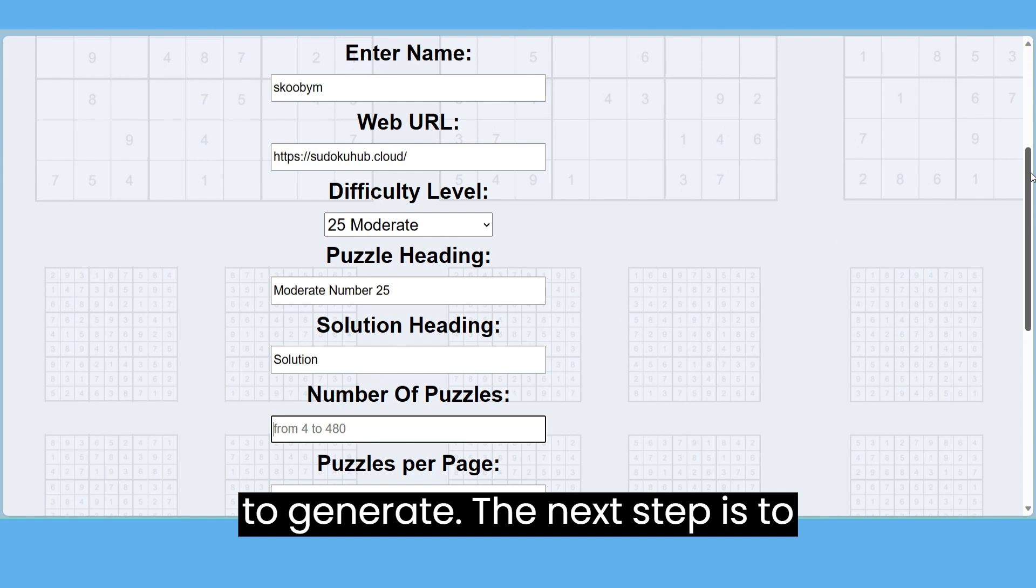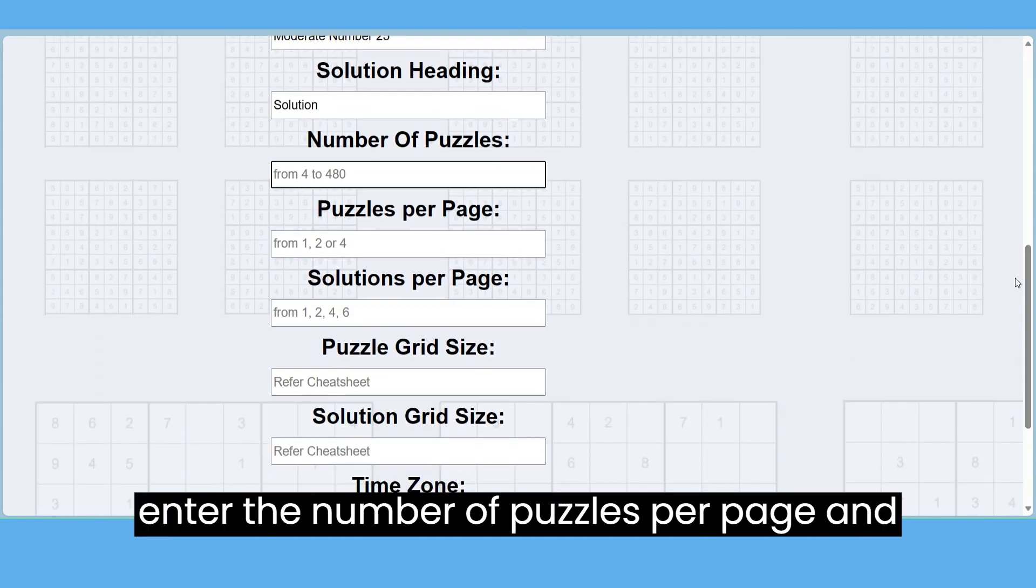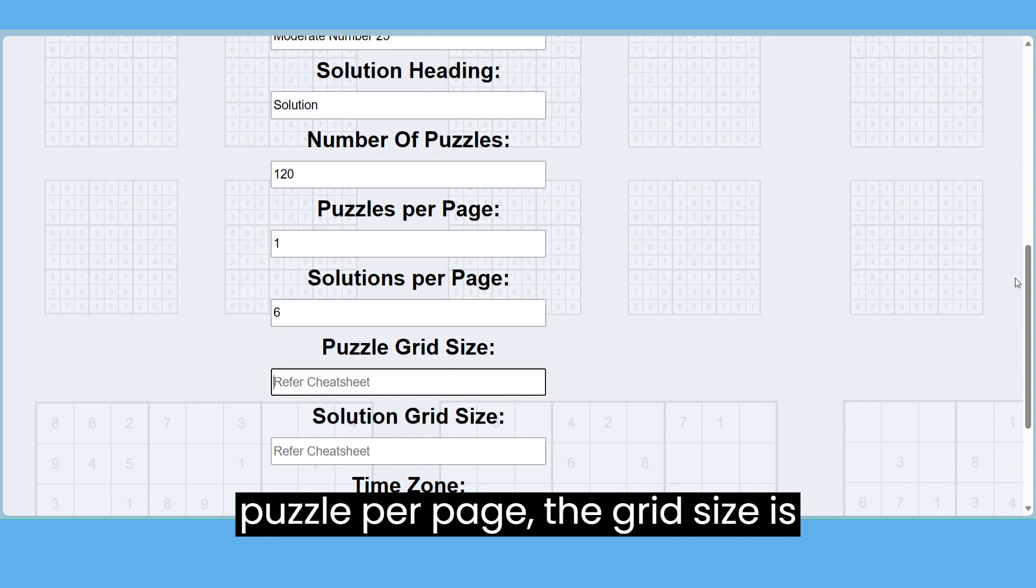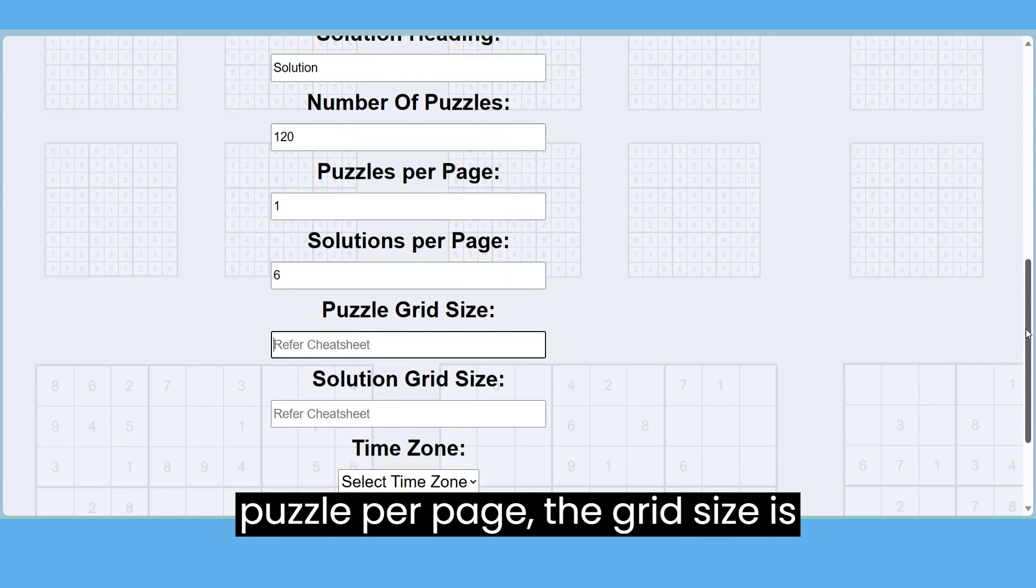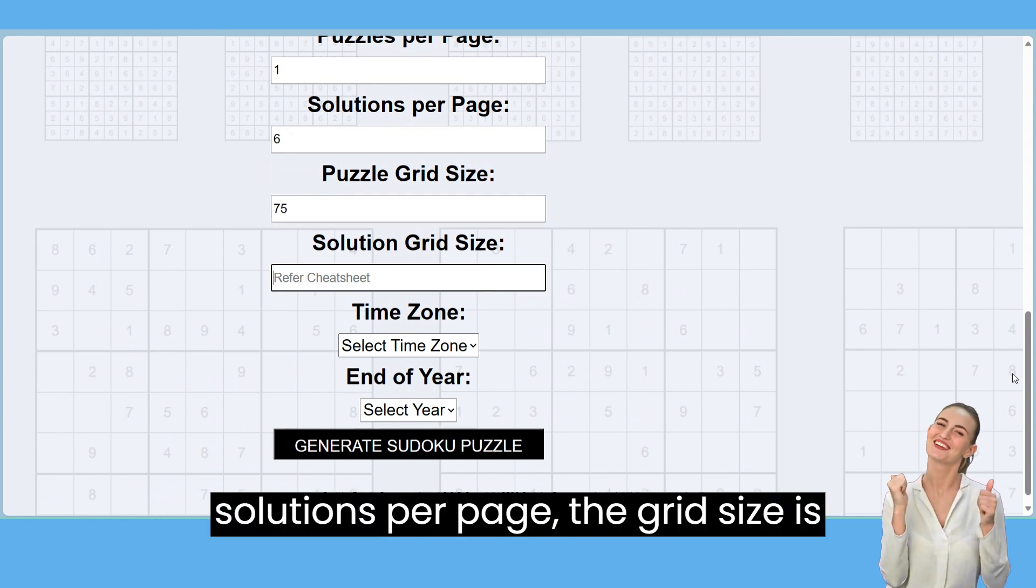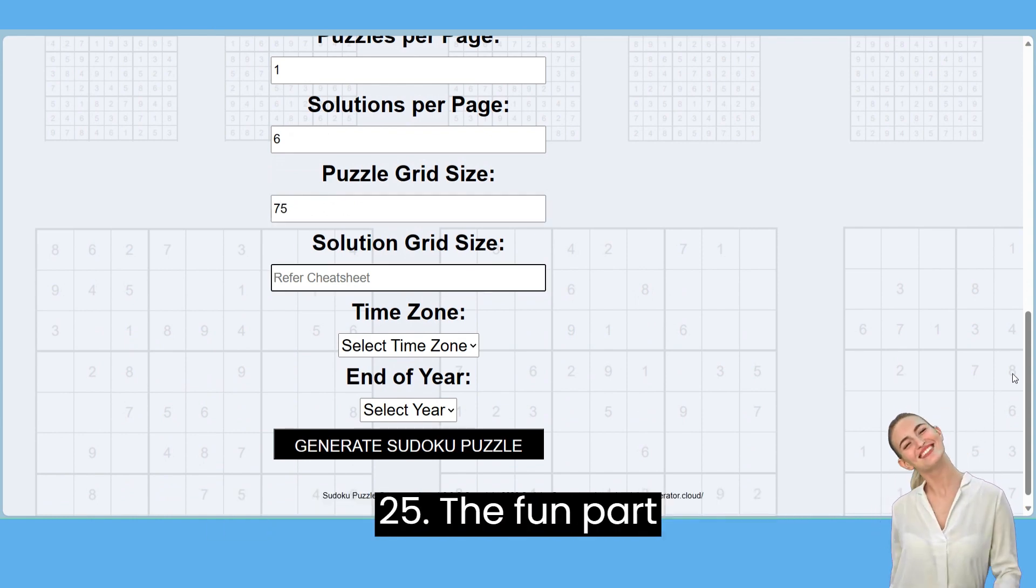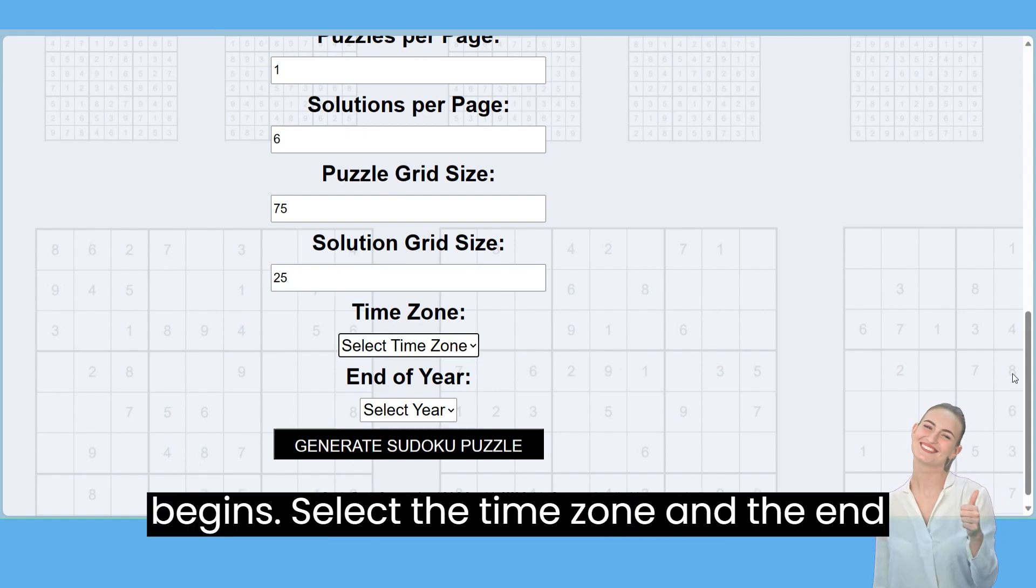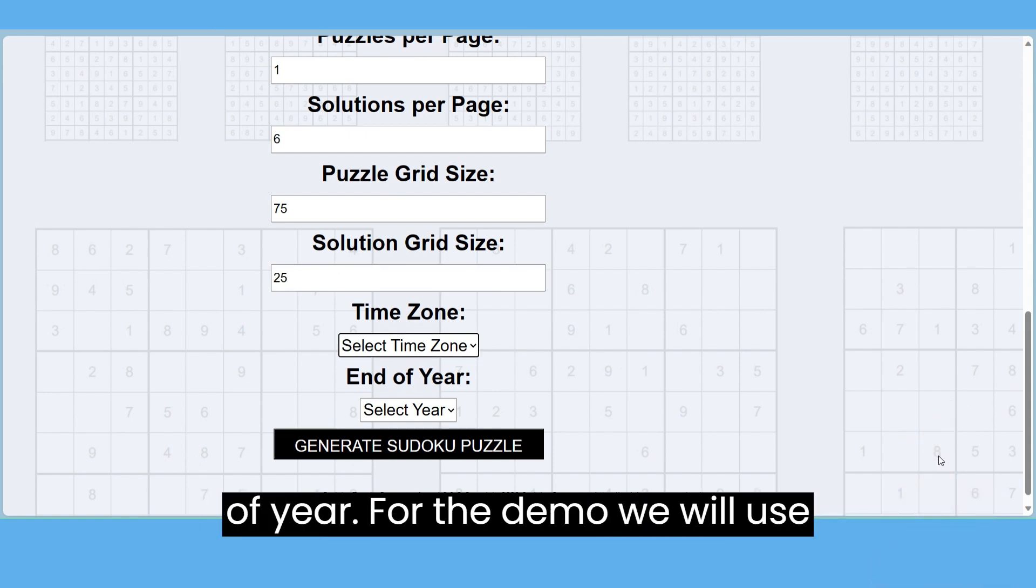Now enter the number of puzzles you want to generate. The next step is to enter the number of puzzles per page and solutions per page. For one puzzle per page, the grid size is 75. For six solutions per page, the grid size is 25. The fun part begins - select the time zone and the end of year. For the demo we will use 2024.